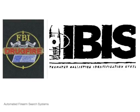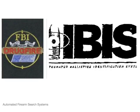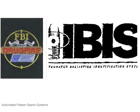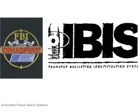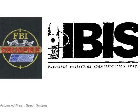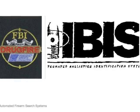There are two gun databases run by the federal government. The first is called Drug Fire, run by the FBI, and the other is IBIS, run by the Bureau of Alcohol, Tobacco, and Firearms.